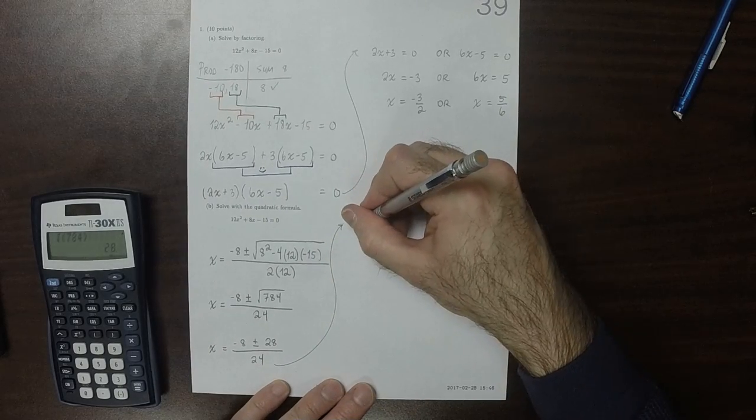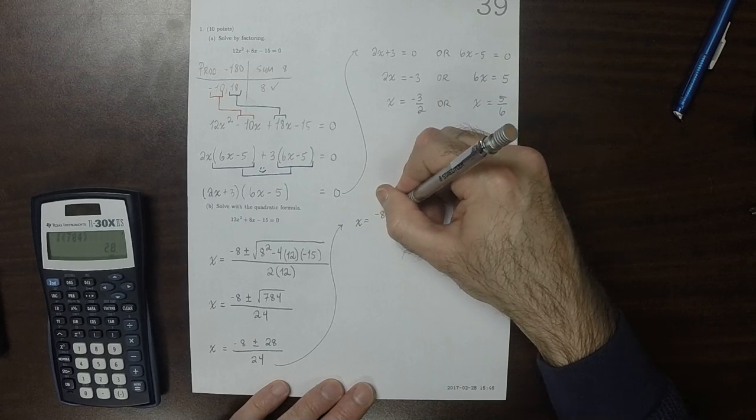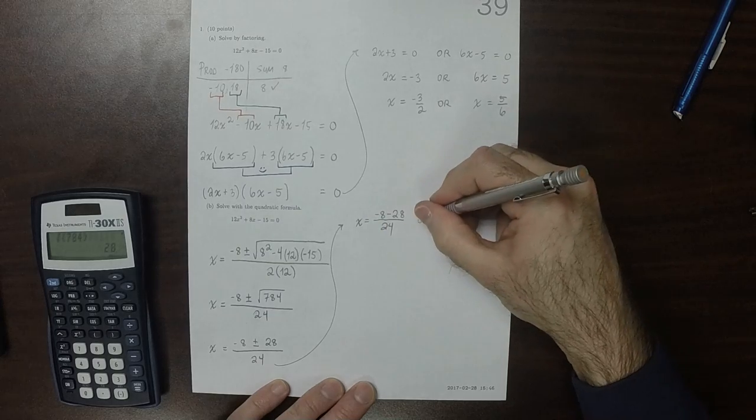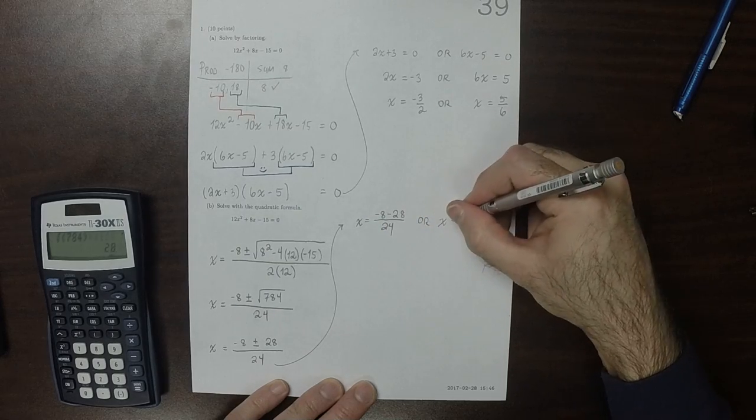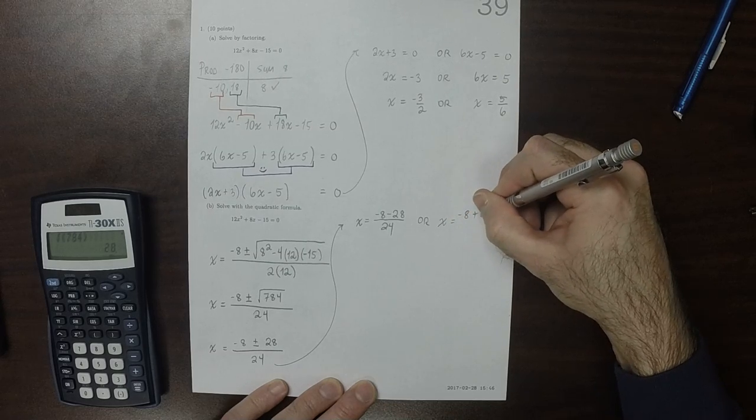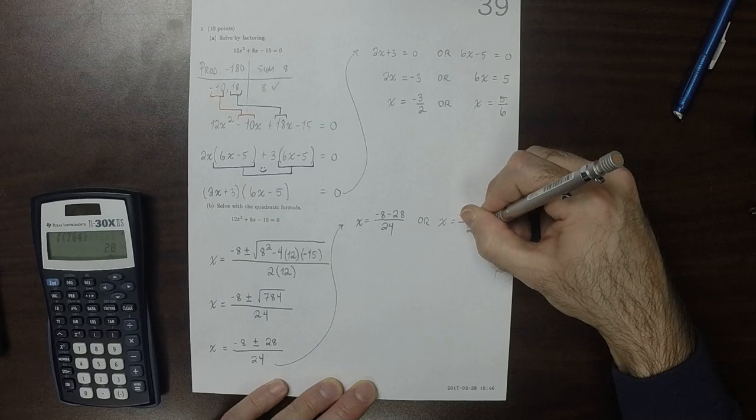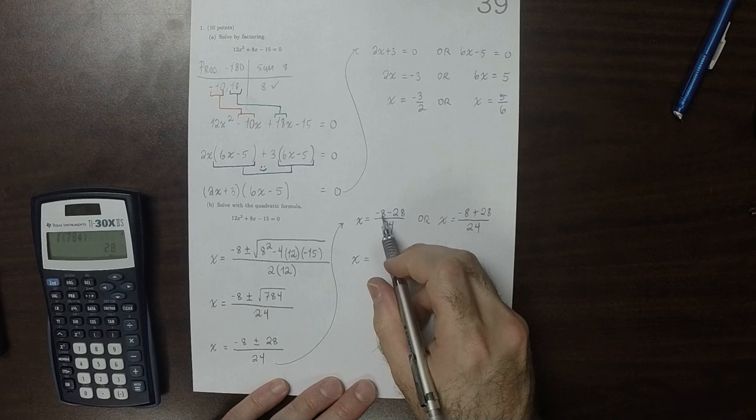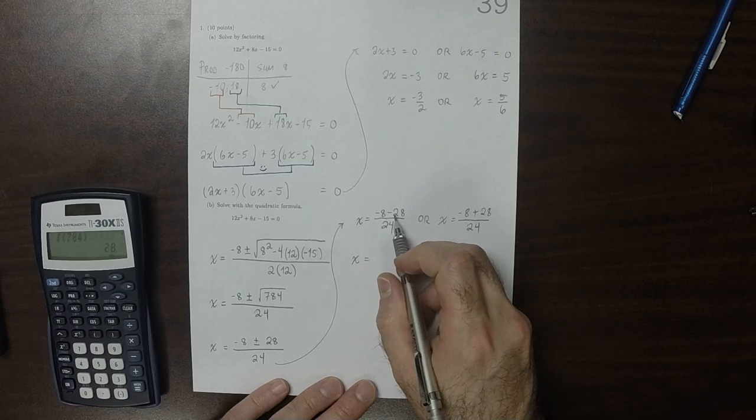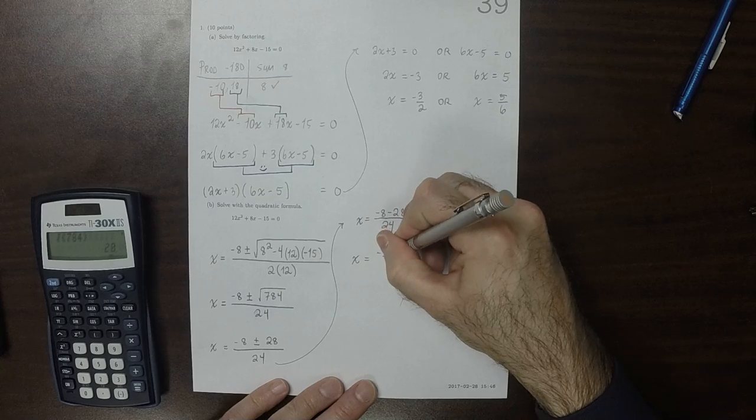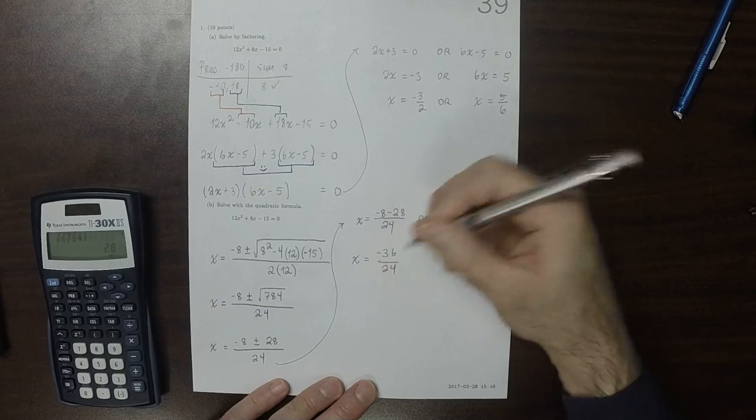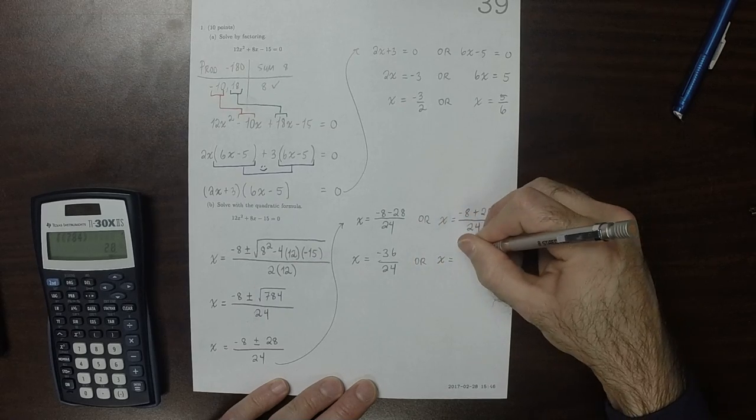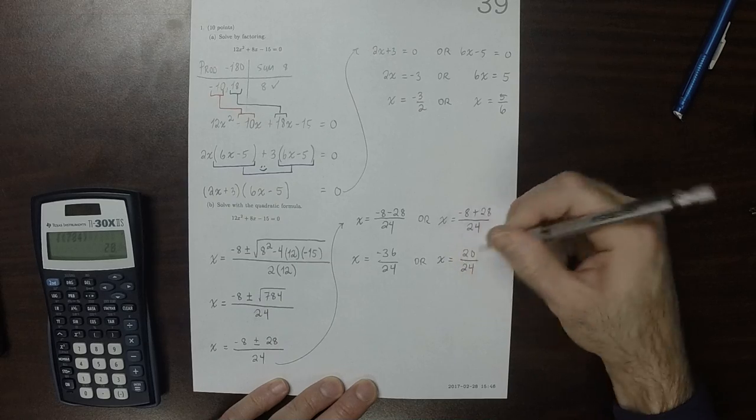So that would be negative 8 minus 28 over 24, or negative 8 plus 28 over 24. So that is negative 8 minus 28 is negative 36 over 24, and this is 20 over 24.